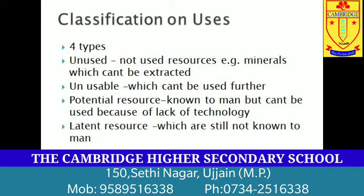Ab agli jo classification hai, that is based on uses. Isse bhi chaar types mein categorize kiya gaya hai. Pehla hai unused resource — jo resources istamal mein nahi hain use unused resource kehte hain, jaisi kuch minerals ke deposits ki jaankari toh hai lekin unhein extract karke istamal nahi kar sakte. Next is unusable resources — that is resources which cannot be used further even with present day technique. Next is potential resource — these are the resources which are known to man but are not in use because of lack of technology or planning. In resources ki jaankari toh hai lekin present technology mein inhein use nahi kar sakte, maybe they might be used in the future.